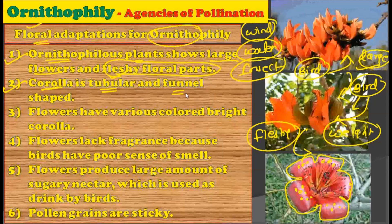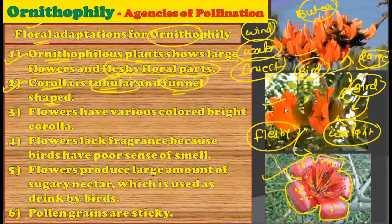The second adaptation is that the corolla is tubular and funnel-shaped. As you can observe in this flower of Butea monosperma, the corolla in all three photographs is quite tubular and funnel-shaped. Having a funnel-shaped corolla is very attractive for birds because they can directly come, sit into it — it looks like a chair arrangement — and easily extract the nectar. This tubular and funnel-type corolla is advantageous for ornithophilous plants.